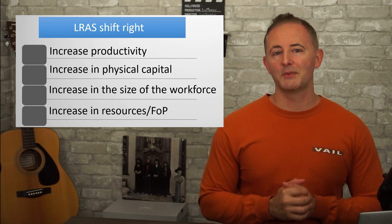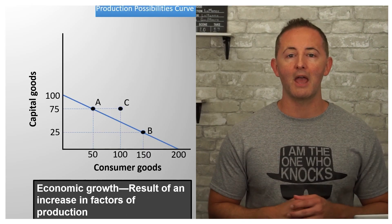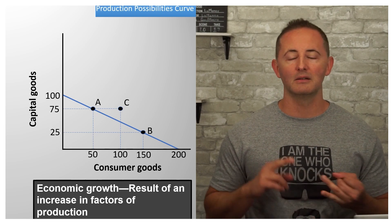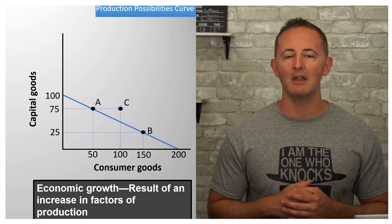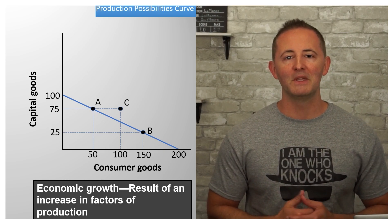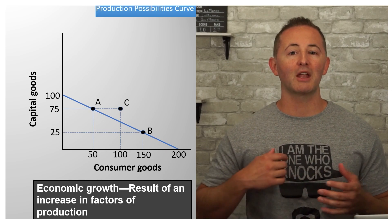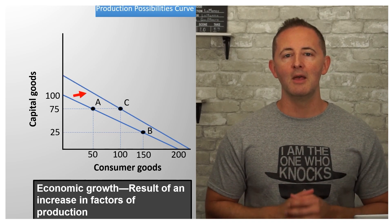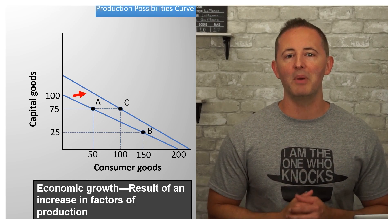Since I did such a great job explaining what shifts the PPC in video 1.2, I'm going to explain that again. Economic growth is the result of an increase in our factors of production. So if land, labor, and capital increase, the possibilities of what can be produced in our economy will also increase. This means more natural resources, more machinery, better tools, better technology, a better educated workforce will all cause our PPC to shift outward to the right, meaning that those combinations that aren't currently possible can become possible in the future.